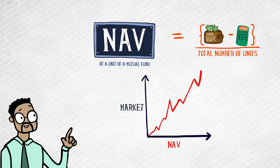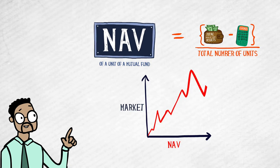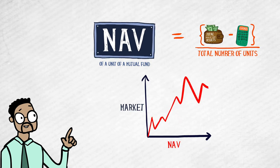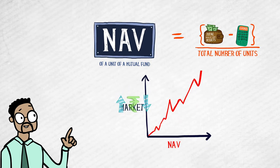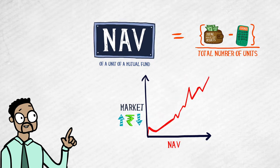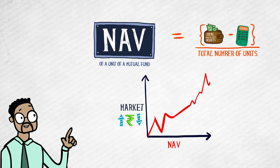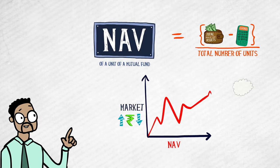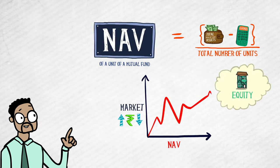You may wonder how NAV rises or falls. The NAV changes because the underlying portfolio's value goes up or down depending on the market. This is specifically true of equity schemes.